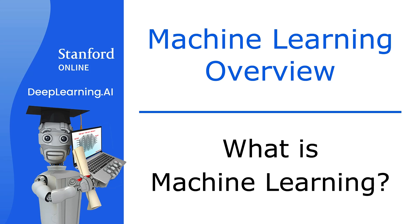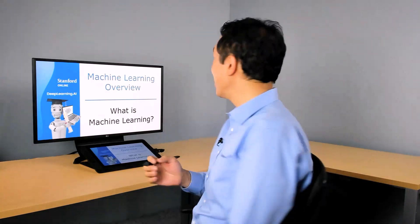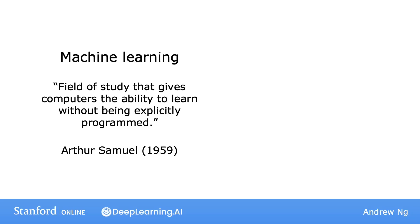So what is machine learning? In this video you'll learn a definition of what it is and also get a sense of when you might want to apply it. Here's the definition of machine learning that is attributed to Arthur Samuel. He defined machine learning as the field of study that gives computers the ability to learn without being explicitly programmed.